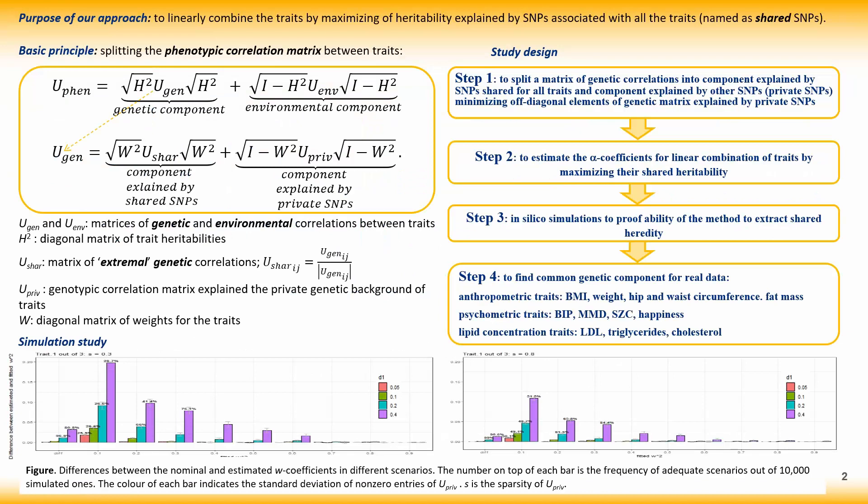The aim of our approach is to obtain a hypothetical trait with the maximal heritability explained by SNPs associated with all the original traits. To do so, we use a linear combination of the original traits, as shown on this slide.